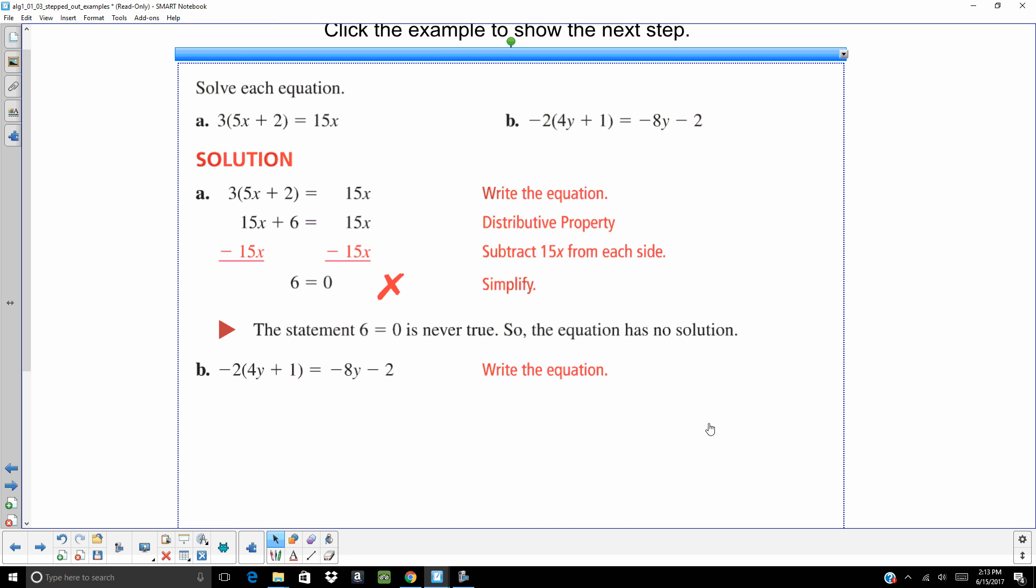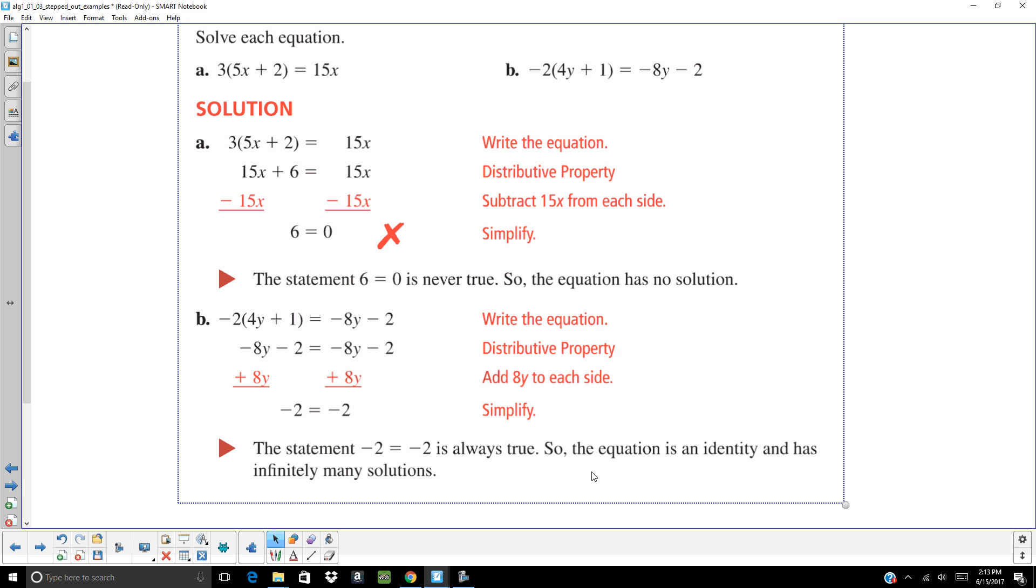Next one. Negative 2 times quantity 4y plus 1 equals negative 8y minus 2. Use that distributive property. Add 8y to both sides, and I get negative 2 equals negative 2. That is 100% true. That's never going to change. So, that one has infinitely many solutions. So, what it comes down to, a false statement, no solution. A true statement, infinitely many.